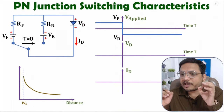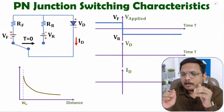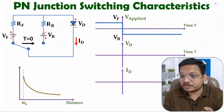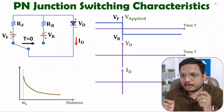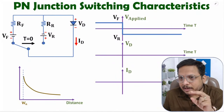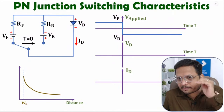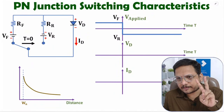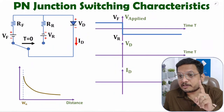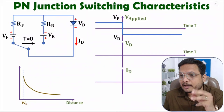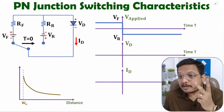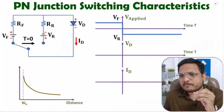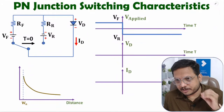So, how does that transition from forward to reverse happen? We need to understand this along with the timing diagram and internal function. I will explain this transition in two stages: first is steady state, and second is transition. Let us understand how things are in steady state first.